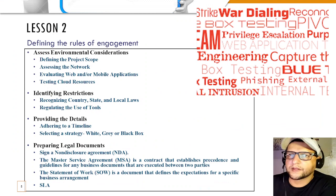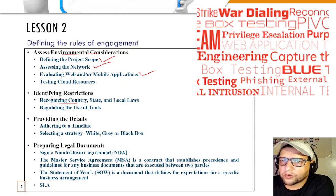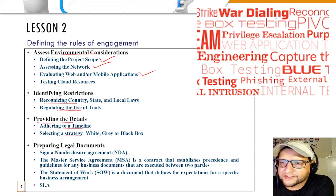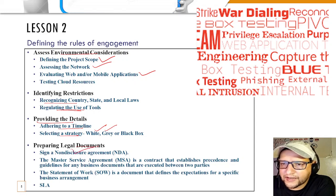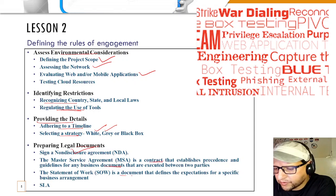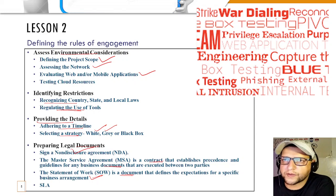In Lesson 2, you'll define the rules of engagement — assessing environment considerations, defining project scope, assessing networks, web and mobile applications, and cloud resources. You'll identify restrictions, recognize country, state, and local laws regulating tool use, adhere to timelines, select strategies, and understand white box, gray box, and black box pen testing. You'll prepare legal documents including NDAs, MSAs (contracts between two parties), statements of work, and SLAs.